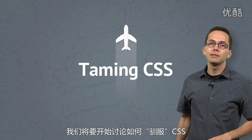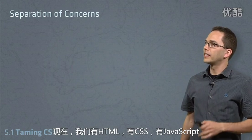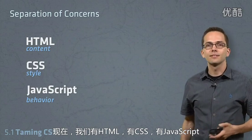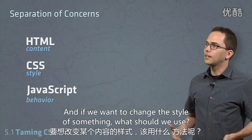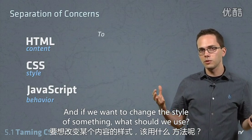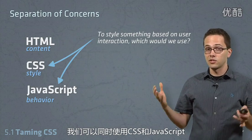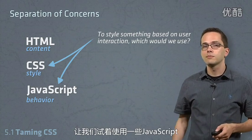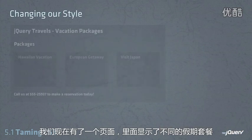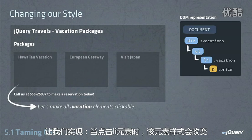We're going to start by talking a little bit about taming CSS. So we've got HTML, we've got CSS, and we've got JavaScript. And if we want to change the style of something, what should we use? We can use both CSS and JavaScript. Let's try using some JavaScript. Here we've got a page with different vacation packages. Let's make it so that when people click on the li element, it changes the style.